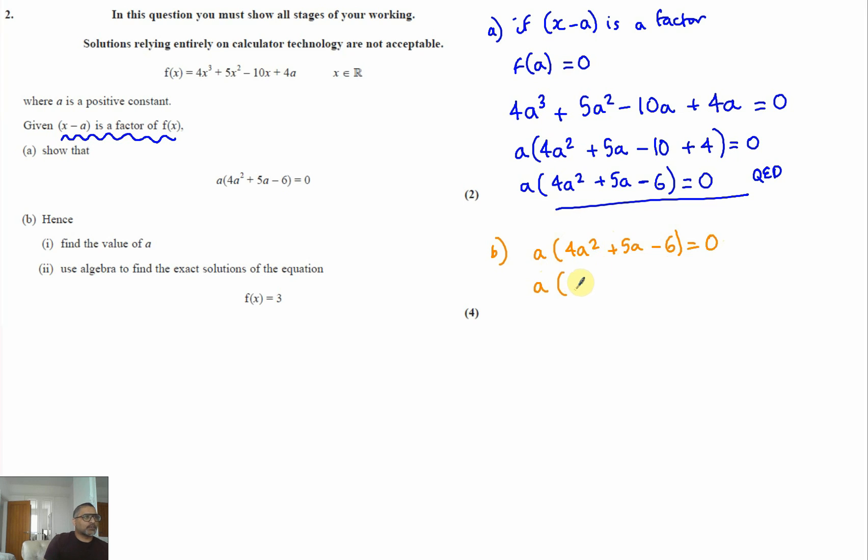If we factorize this, that gives us 4a minus 3 and a plus 2. Now we've got three things being multiplied that equal to zero. So that means one of these three things has to equal to zero.